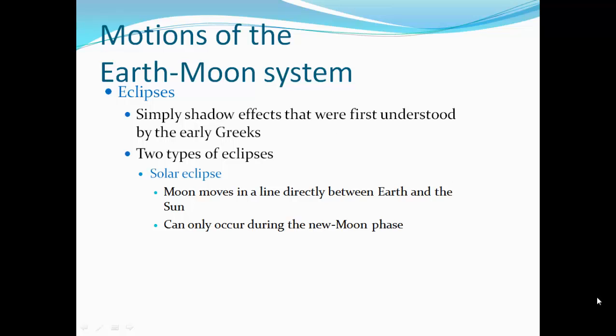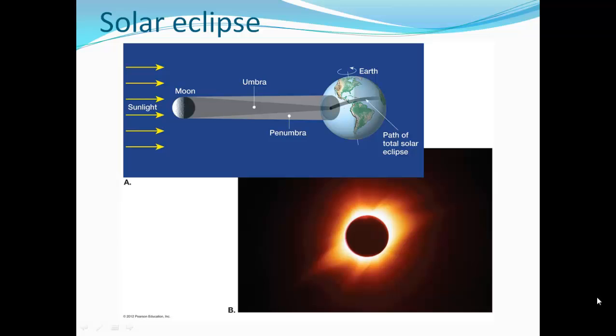Eclipses. This is simply a shadow effect that was first understood by the early Greeks. Two types of eclipse. The solar eclipse: the Moon moves in a line directly between the Earth and the Sun, can only occur during the New Moon phase.